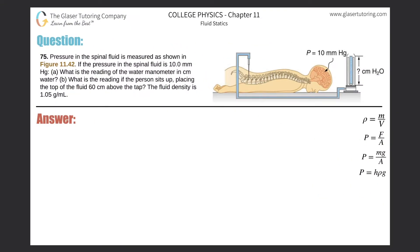Problem 75: pressure in the spinal fluid is measured as shown in figure 11.42. If the pressure in the spinal fluid is 10 millimeters of mercury, letter A asks what is the reading of the water manometer in centimeters of water. Basically, we have to convert 10 millimeters of mercury into centimeters of water.